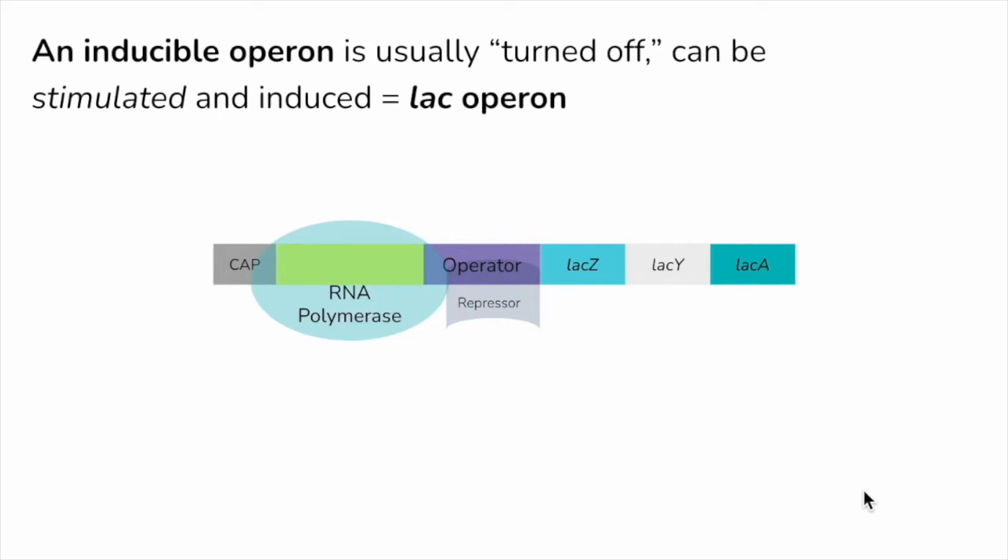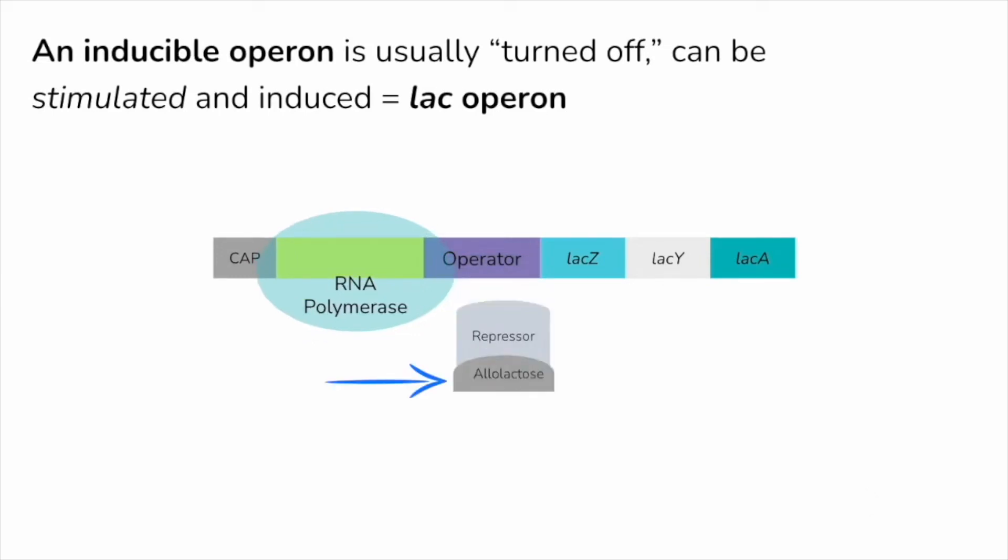But when lactose does show up, a version of it, allolactose, can bind to the repressor, removing it from the operator. This allows RNA polymerase to move down the operon and transcription can occur. Once transcription occurs, we have the lac mRNA, which can then later be transcribed into a protein that can digest the lactose. Once that lactose is all gone, it no longer binds to the repressor, which means it's back on the operator and we cannot have transcription any longer.